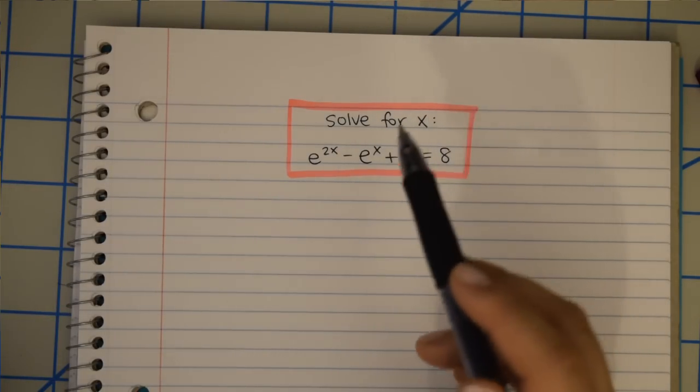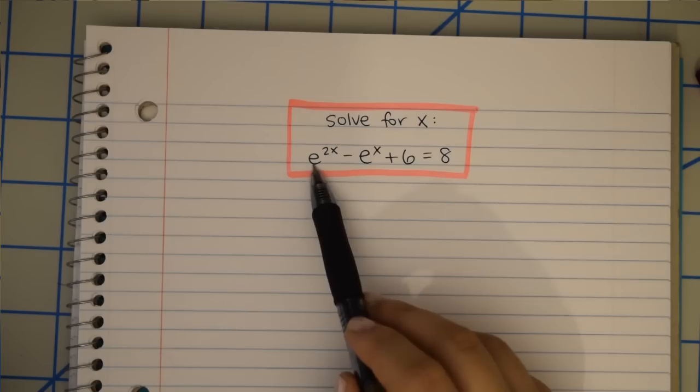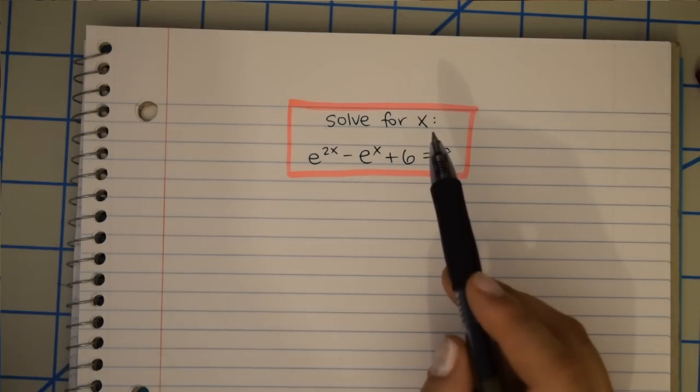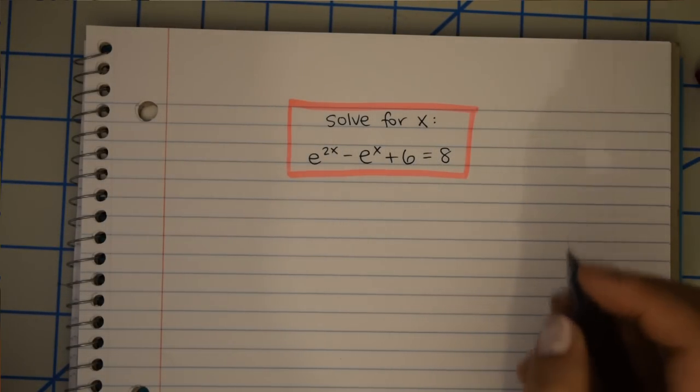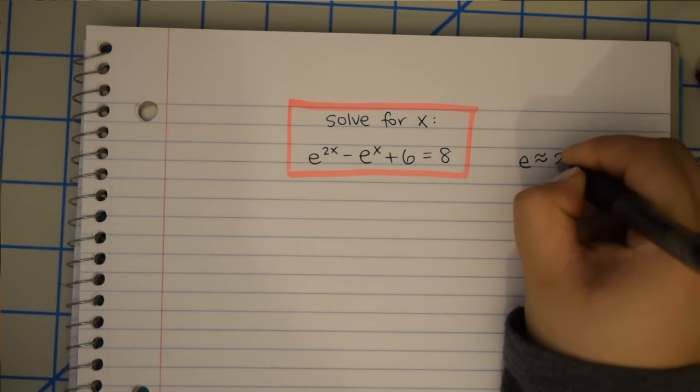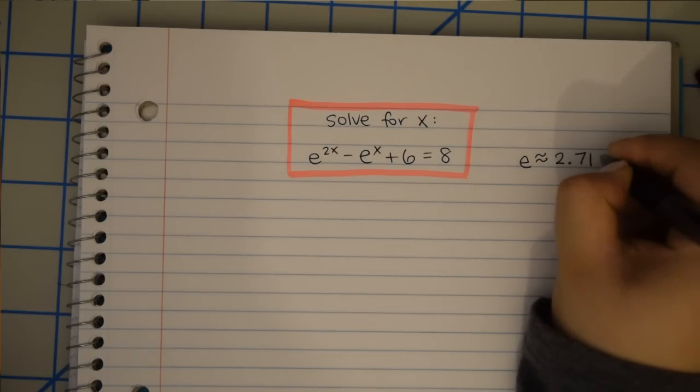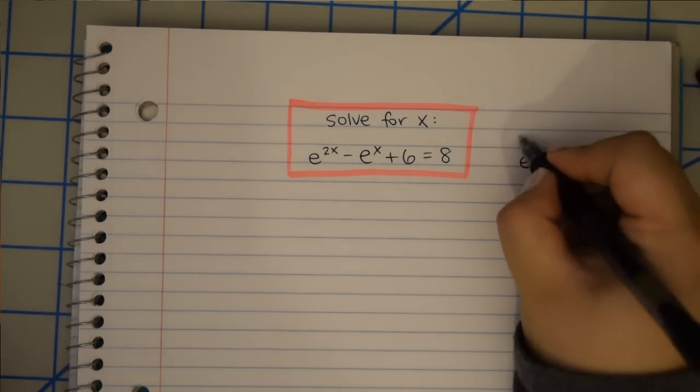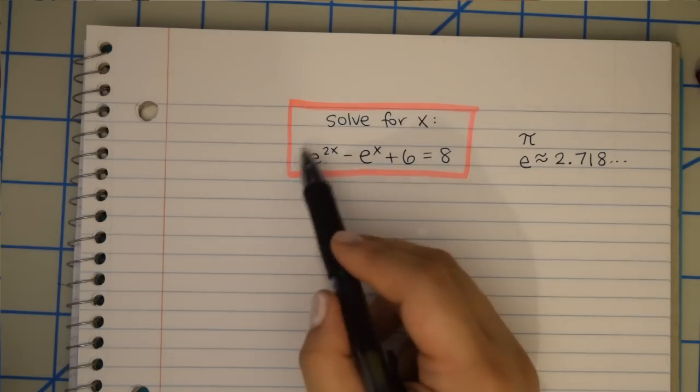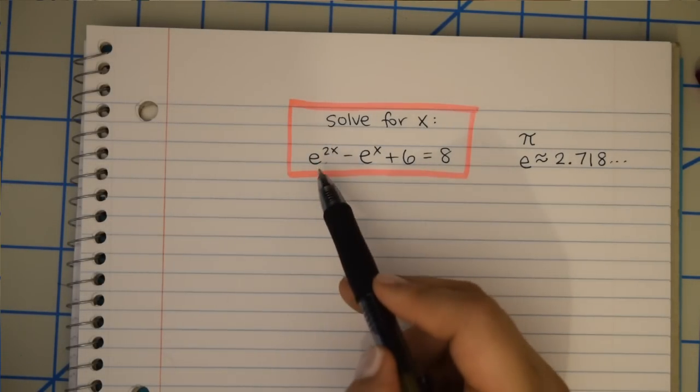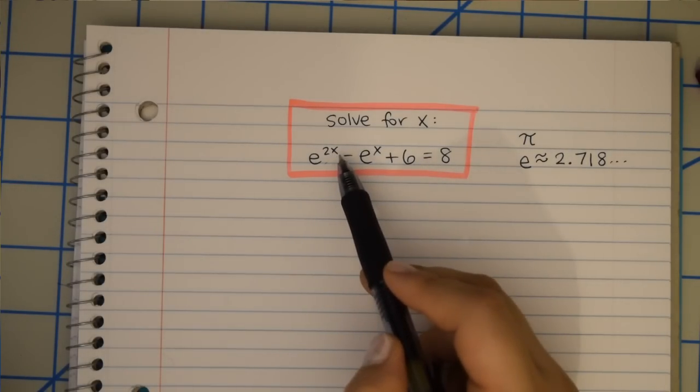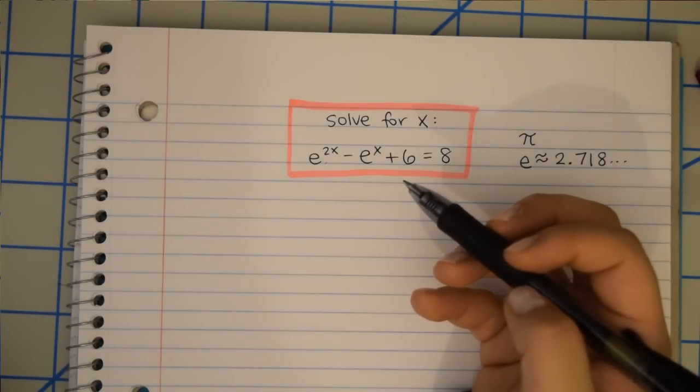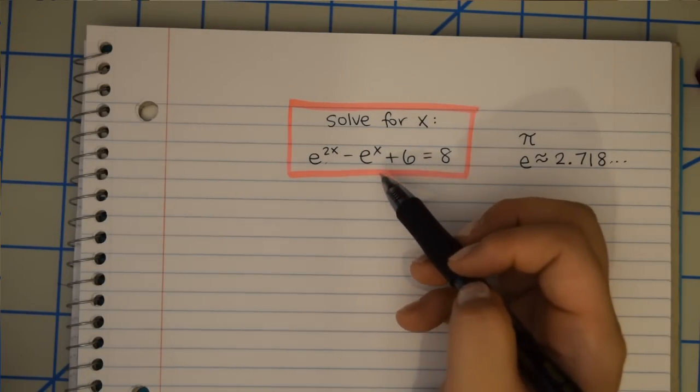So the first thing that I notice is that we're trying to solve for x. And x is in the exponent here and here. Even though e is a letter, it's not a variable here. E in math is a constant. It has a value of about 2.718 something, something. It goes on and on and on. So there are infinitely many digits. Kind of like pi. So e is just our symbol. And it's a constant value. So our only variable here in this equation is x. And it just happens to be in the exponents in both. So when you learn about logarithms, it's a way to handle situations when our variable is in the exponent.